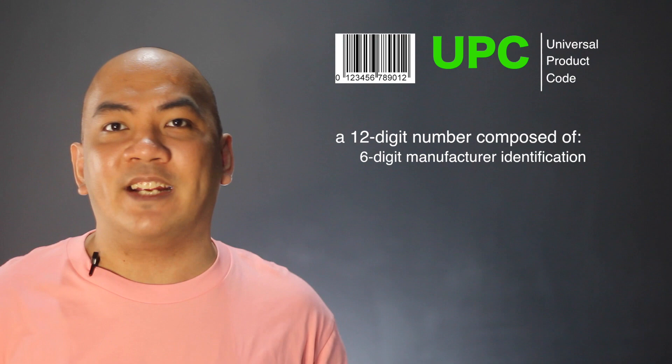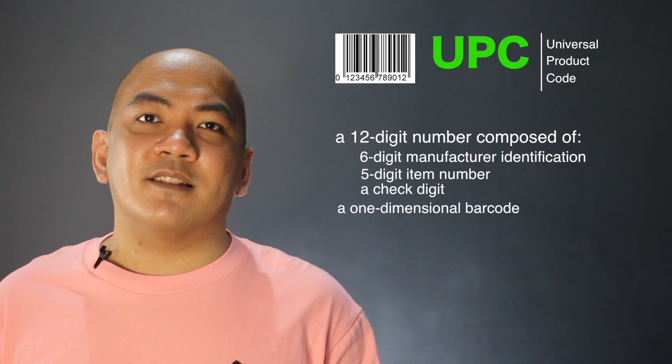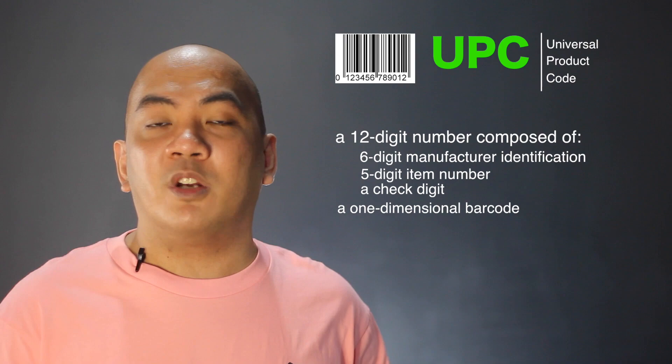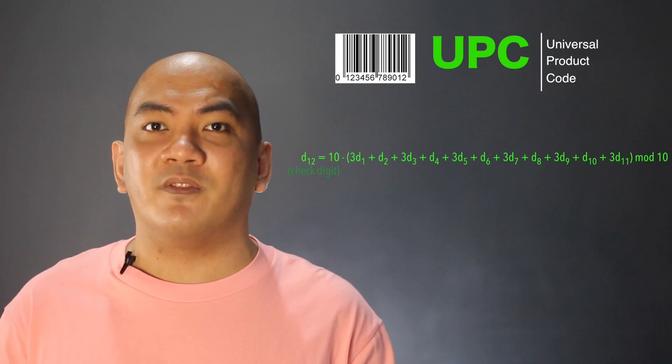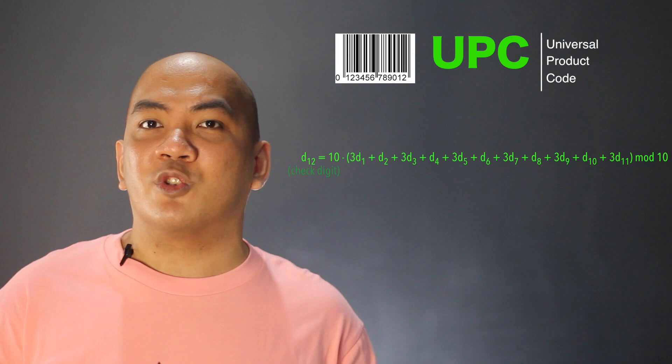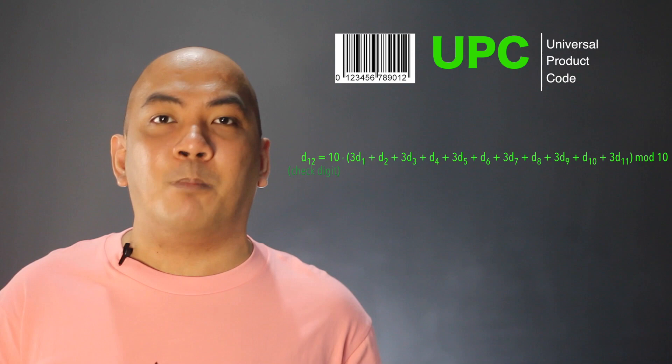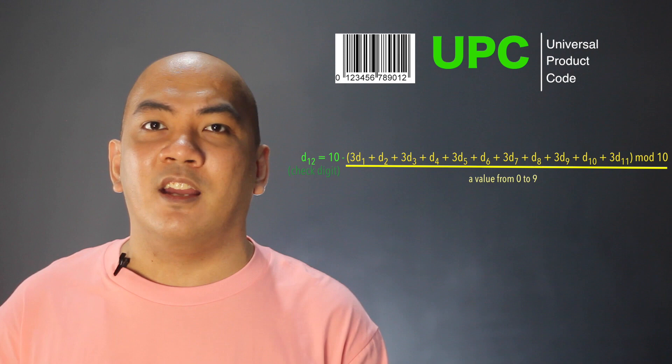The Universal Product Code, or UPC, is a 12-digit number composed of a 6-digit manufacturer identification, followed by a 5-digit item number and a check digit. UPCs are one-dimensional barcodes scanned horizontally, commonly found on grocery items. To verify a UPC, we compute D12 as: 10 minus (3 times D1 plus ... plus 3 times D11) modulo 10, where digits with odd-numbered subscripts are multiplied by 3. If the check digit is 10, we use 0.